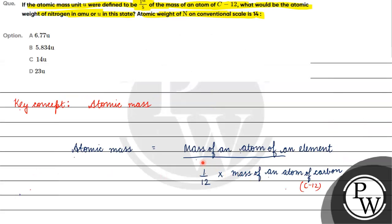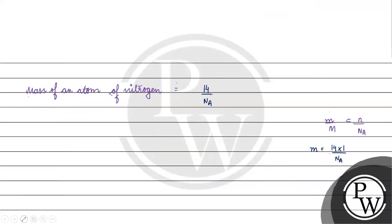In this question, the atomic mass unit, which was originally 1/12 of the mass of an atom of carbon-12, is now redefined as 1/5 of the mass of an atom of carbon-12. So, if we want to find the new atomic mass of nitrogen, it will be: mass of nitrogen atom divided by the new unit, which is 1/5 times the mass of an atom of carbon-12.